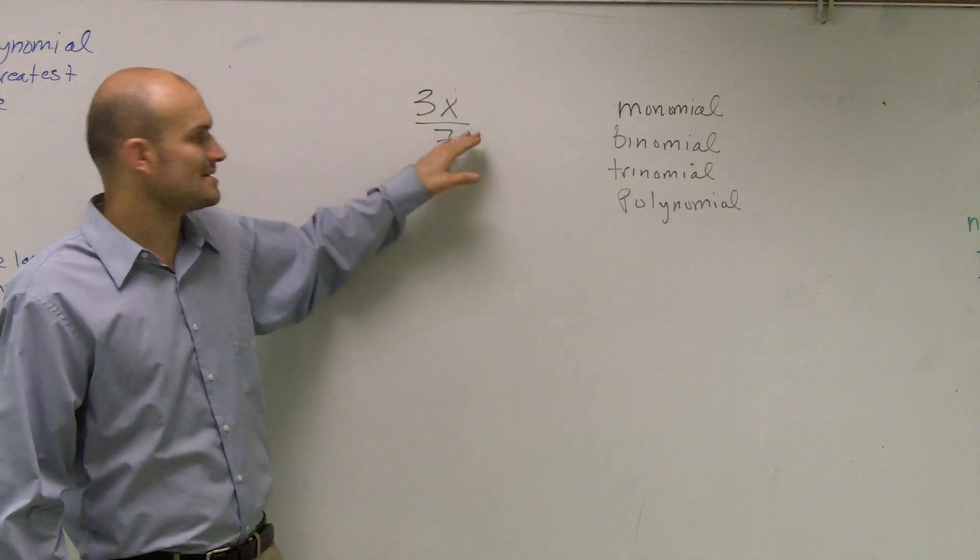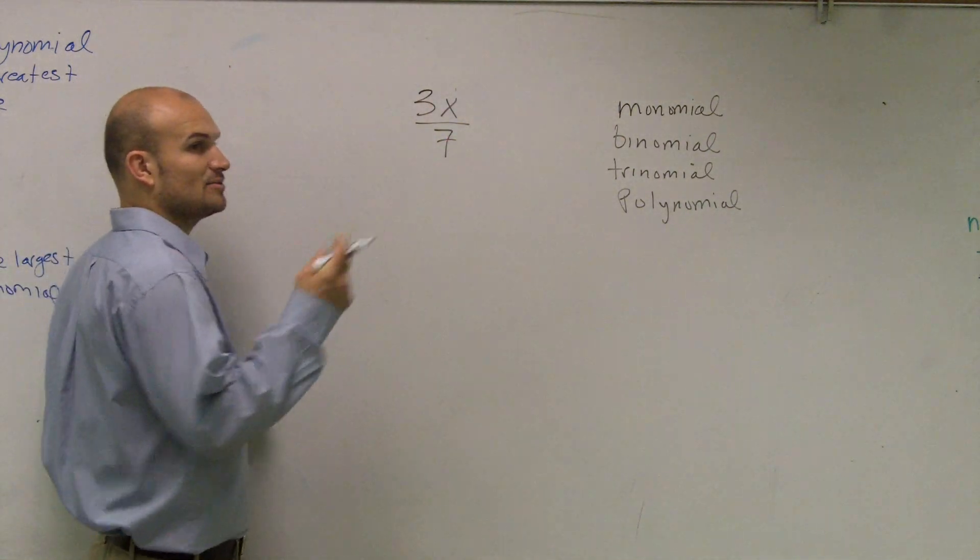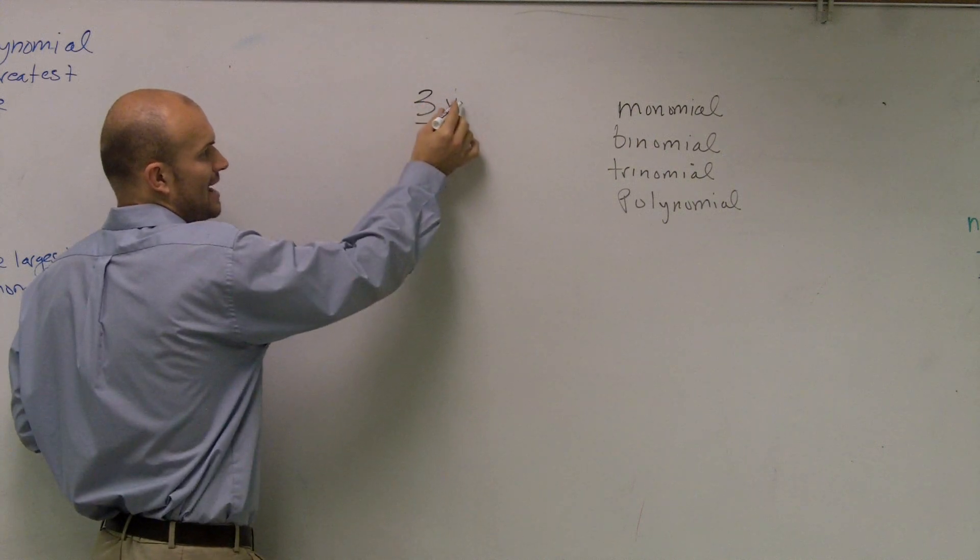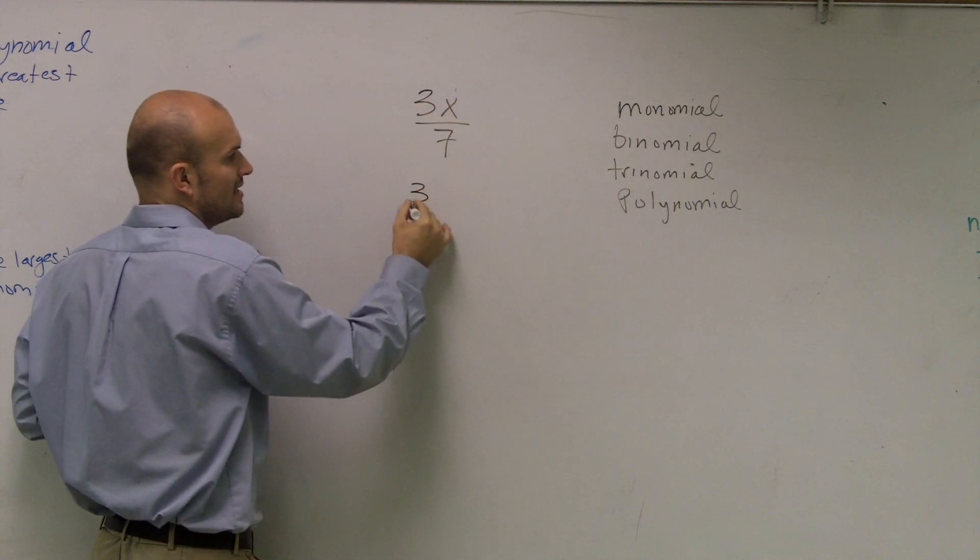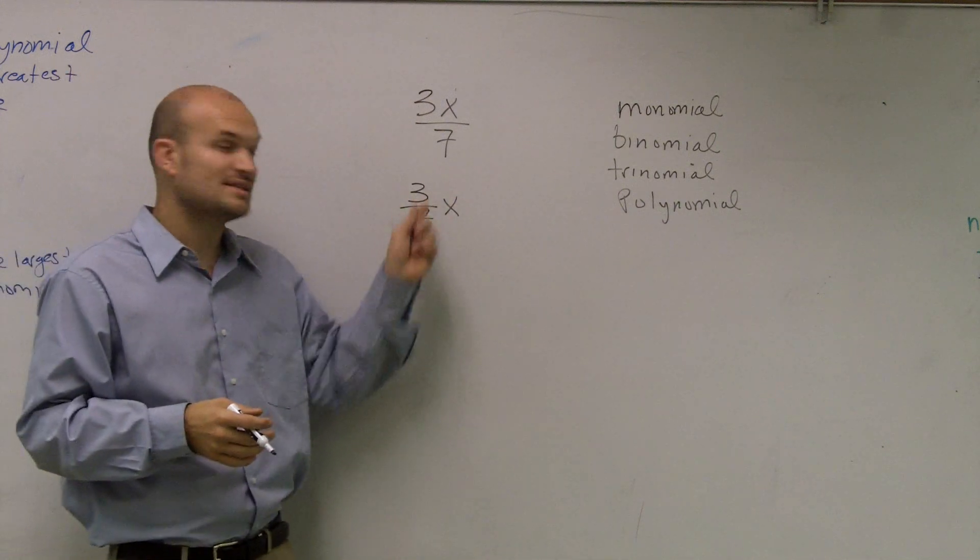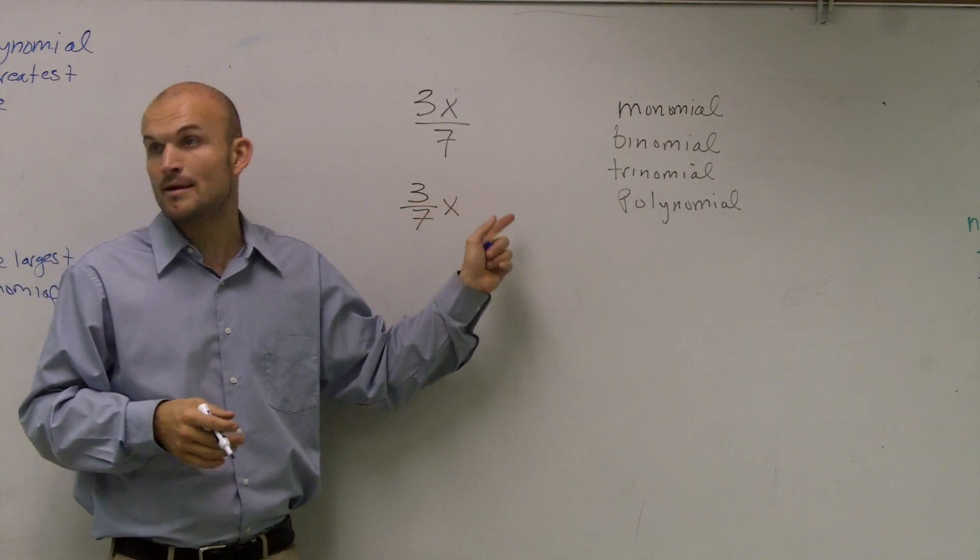But where is the multiplication? Remember, it says a multiplication of a number times a variable. Well, ladies and gentlemen, we can write three times x divided by seven is the same thing as three divided by seven times x. So, therefore, three-sevenths is my number multiplied by my variable.